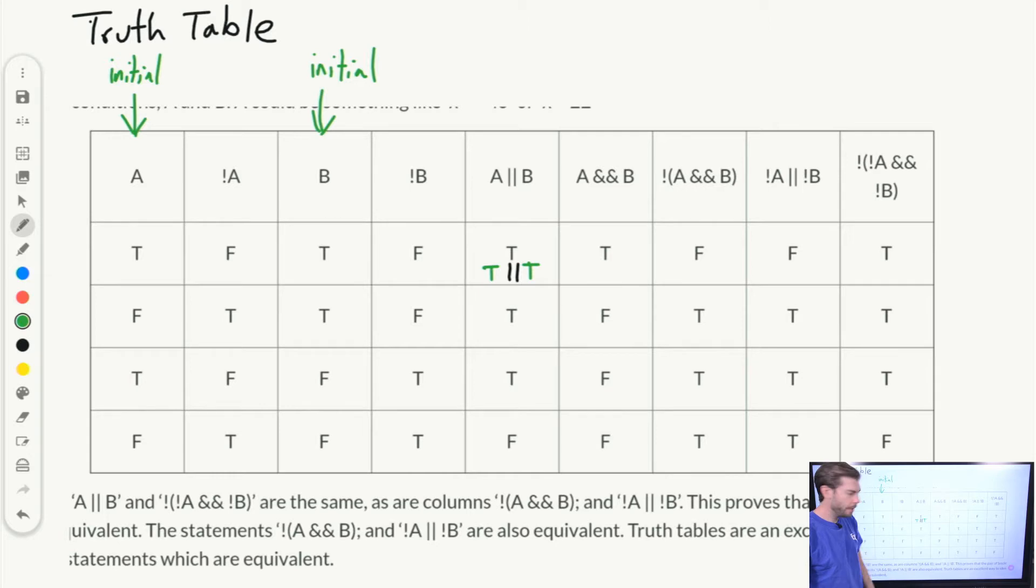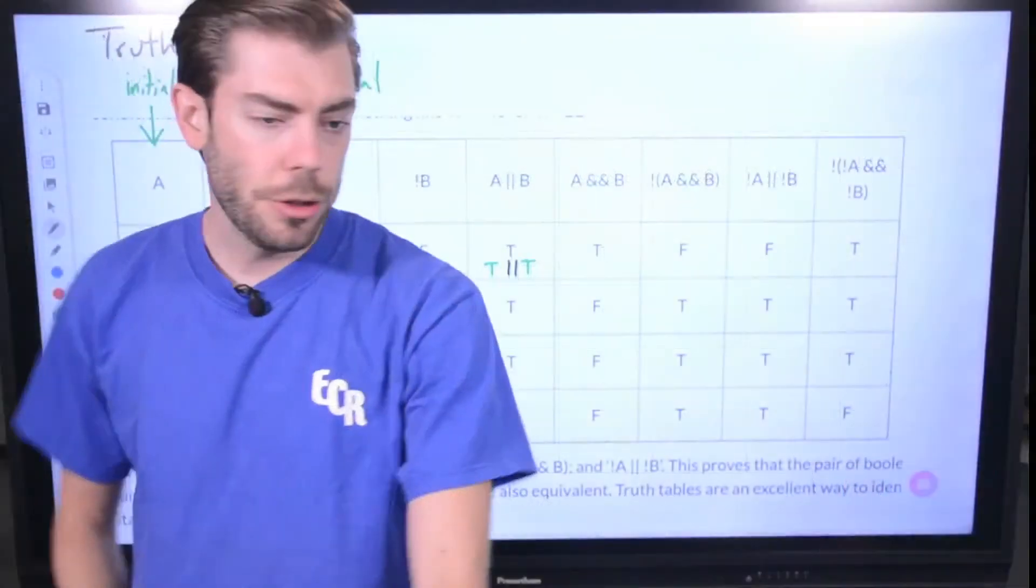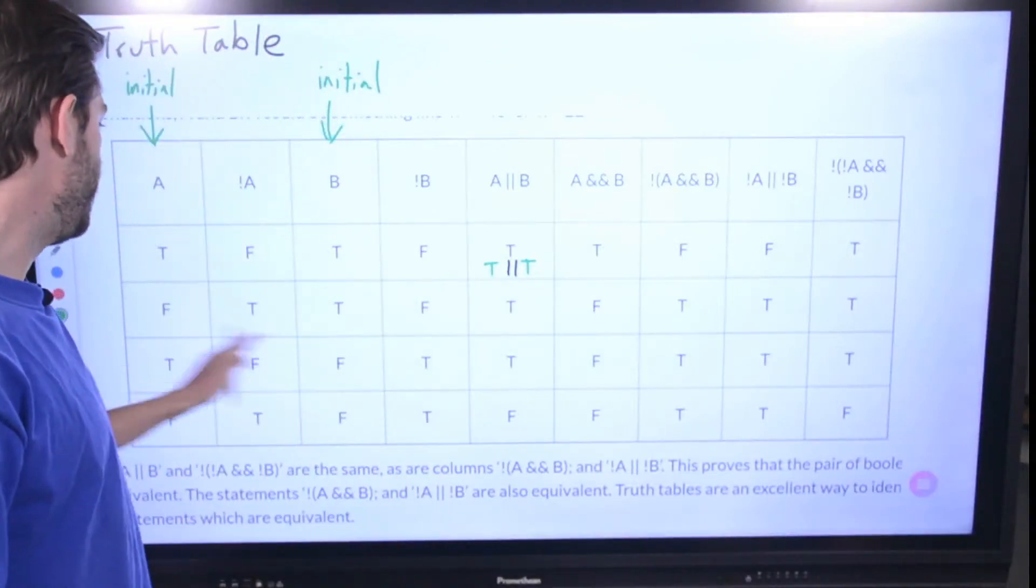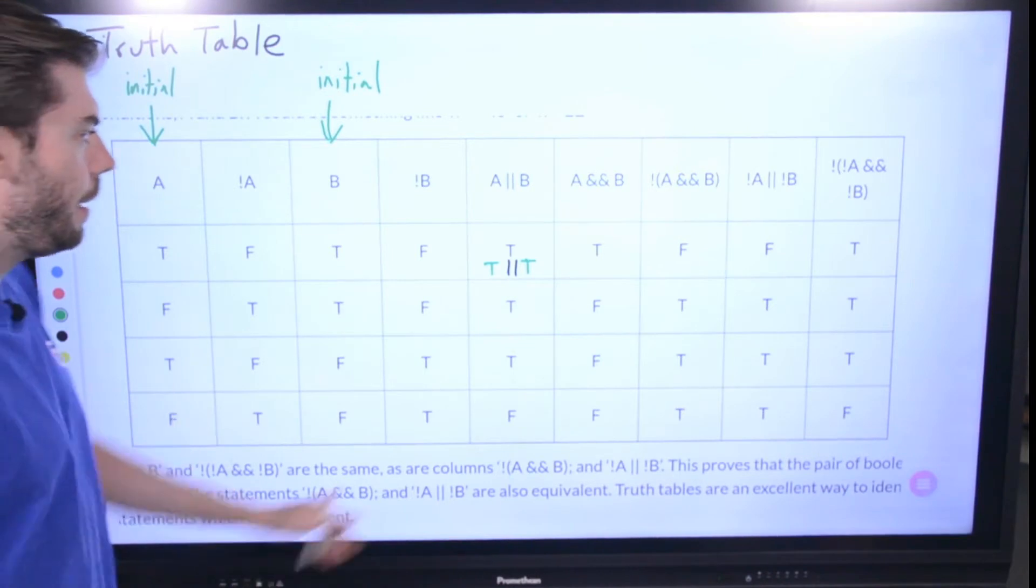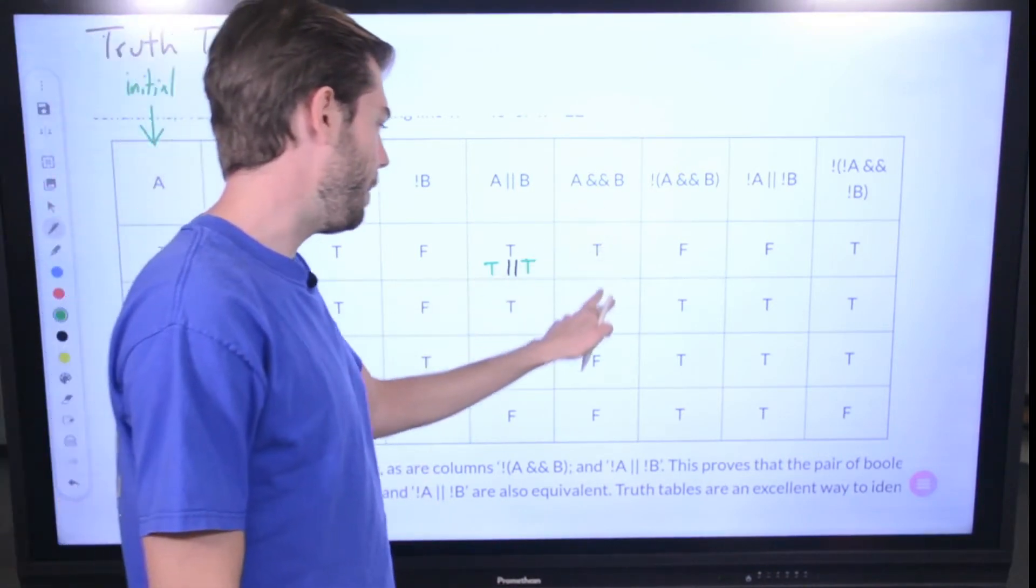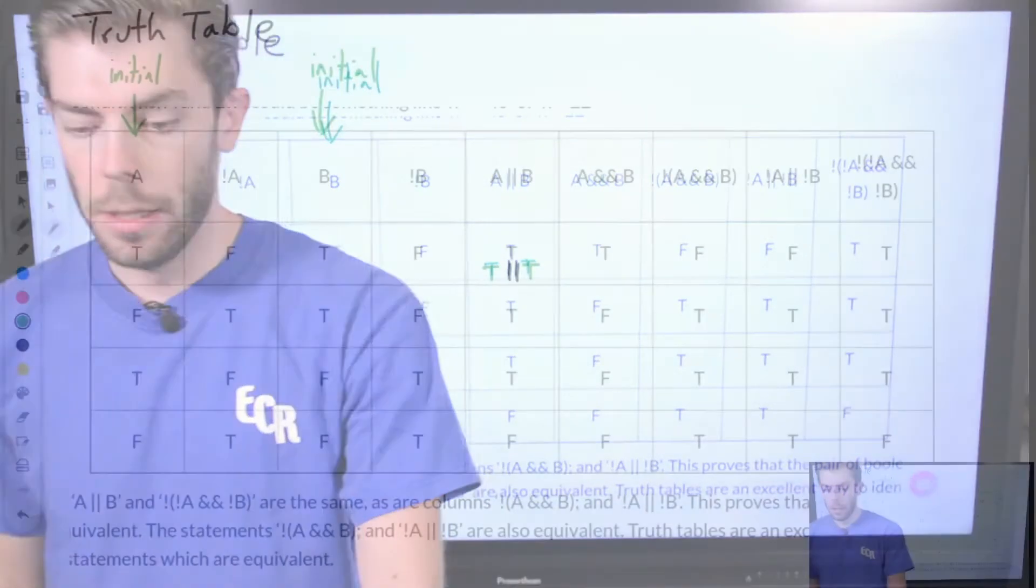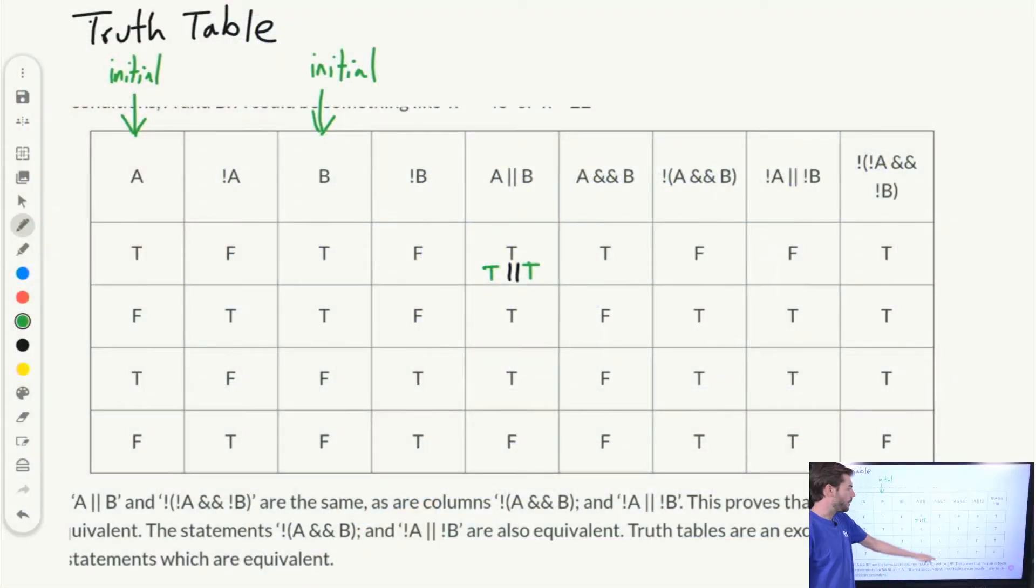And as we go down the line, looking at the initial states of A and B, each of those, one of them is at least, at least one of them is FALSE all the way down the columns here. So when we look in the A and B column, we're going to get FALSEs all the way through there as well.